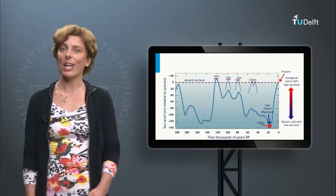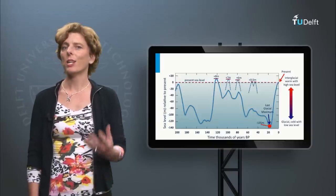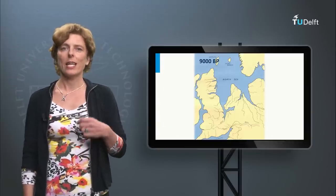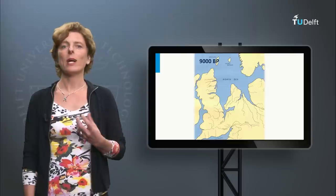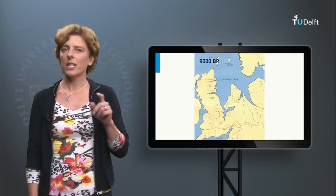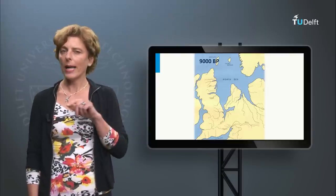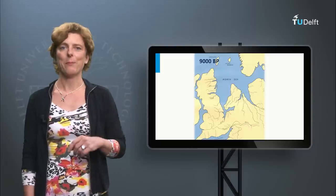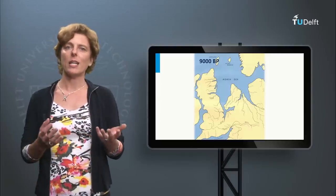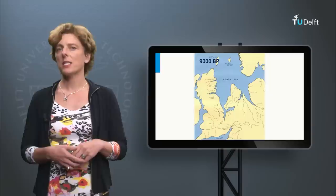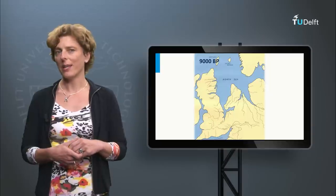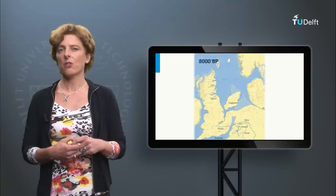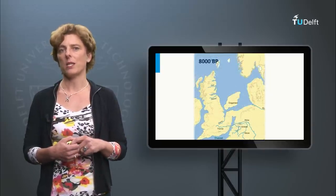Around the last glacial maximum, the shallow North Sea basin was almost completely dry. As a result, for quite a long time one could actually travel by land from the European continent to the UK. As the sea level was rising, the basin experienced flooding. It is this drowning process that has created our present-day North Sea.